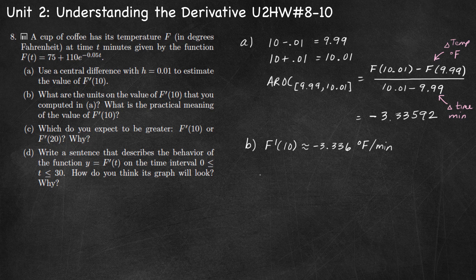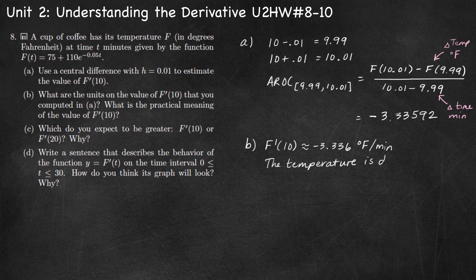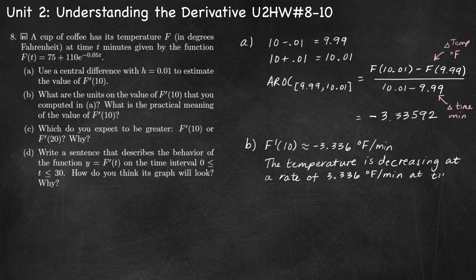At the moment, at the instant when t equals 10 minutes, the temperature is decreasing at a rate of 3.336 degrees Fahrenheit per minute. We know it's decreasing because the instantaneous rate of change is negative. So the temperature is decreasing at a rate of 3.336 degrees Fahrenheit per minute at time t equals 10 minutes.